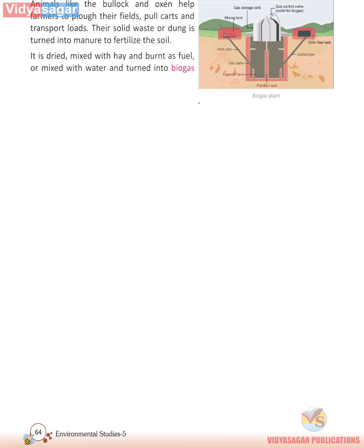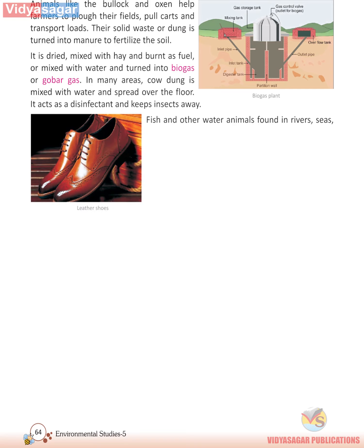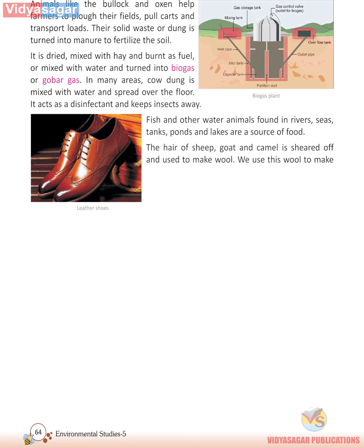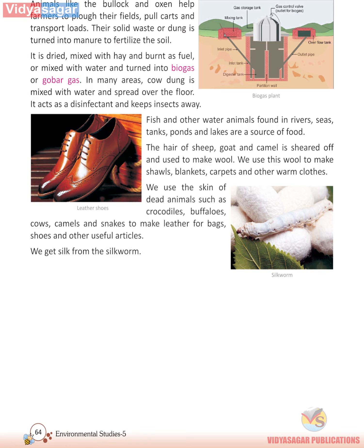Dung can be dried, mixed with hay and burnt as fuel, or mixed with water and turned into biogas. In many areas, cow dung mixed with water is spread over the floor as a disinfectant to keep insects away. Fish and other water animals found in rivers, seas, tanks, ponds and lakes are also a source of food. The hair of sheep, goat and camel is sheared off to make wool for shawls, blankets, carpets and other warm clothes. We use the skin of dead animals such as crocodiles, buffaloes, cows, camels and snakes to make leather for bags, shoes and other articles. We get silk from the silkworm, and some medicines are made from materials obtained from animals.